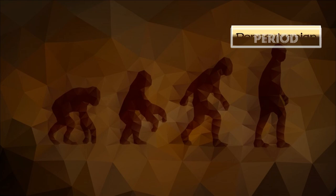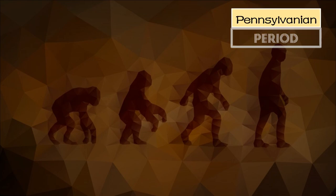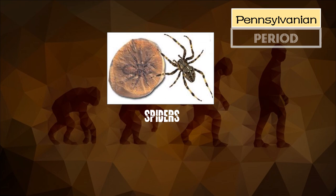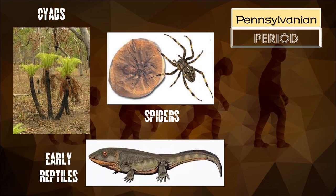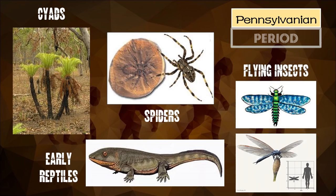We have also the Pennsylvanian period. It extended from 323 million to 290 million years ago. Living things under the Pennsylvanian period include spiders, cycads, early reptiles, amphibians, flying insects, and cockroaches.